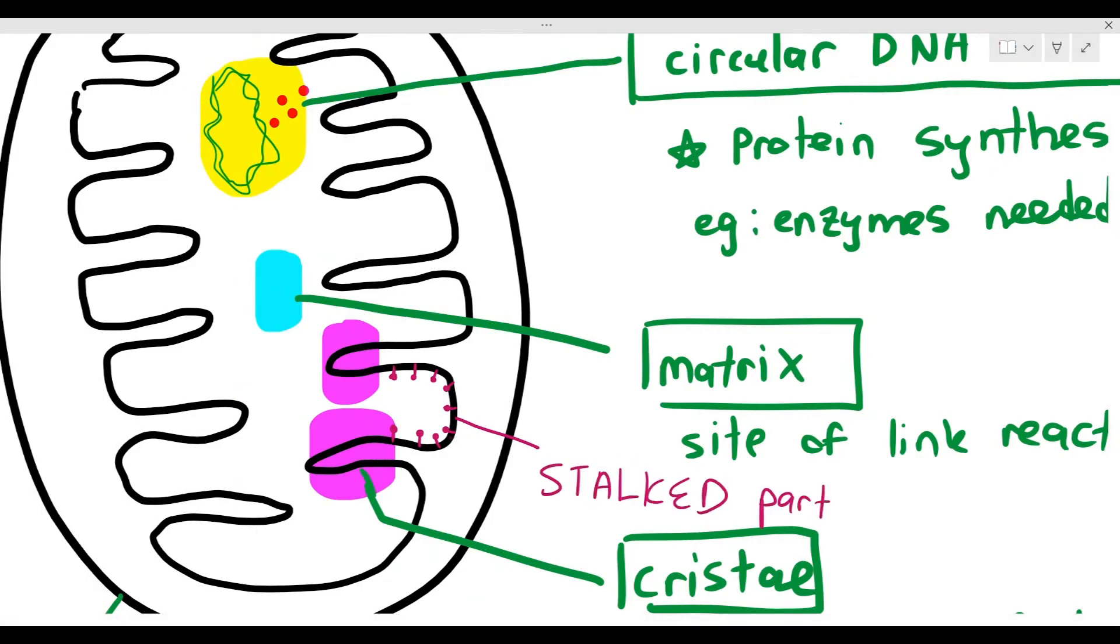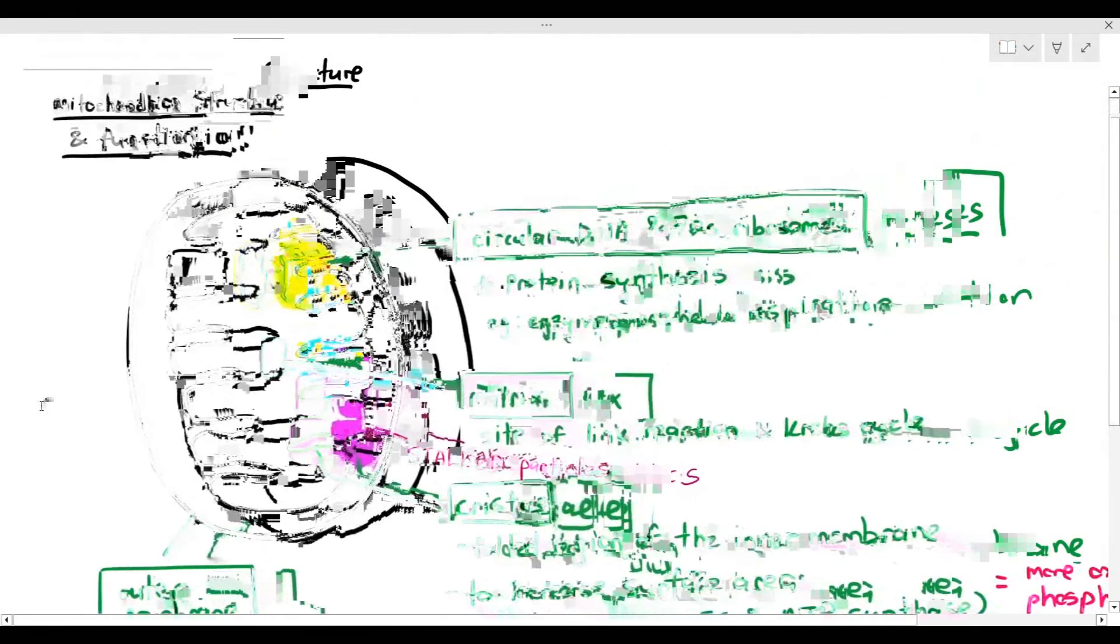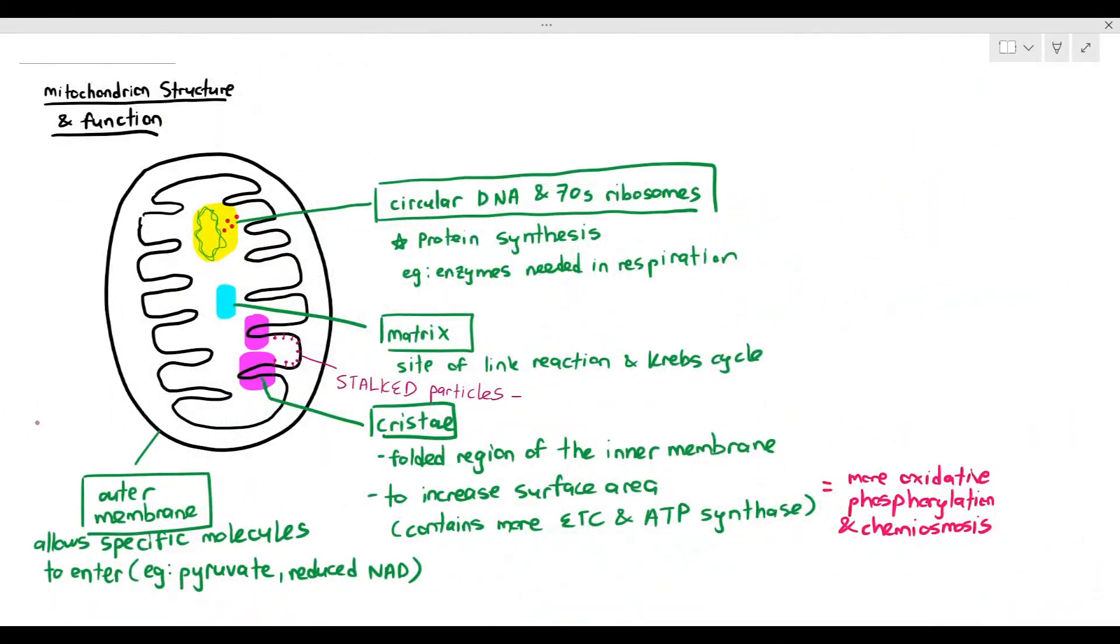And as you can see, because the inner membrane is folded, it has more stalked particles or ATP synthase. And logically, when you have more ATP synthase, ATP production can increase. That is why it's quite interesting to note that the more folded your mitochondrion is, the more efficient it is in producing or synthesizing ATP. That's all we have to know about the adaptation of the mitochondrion.